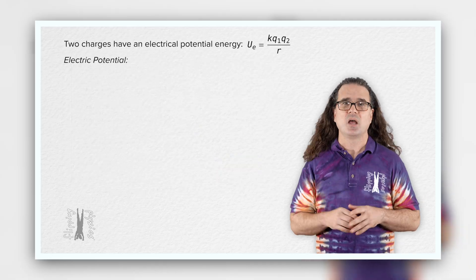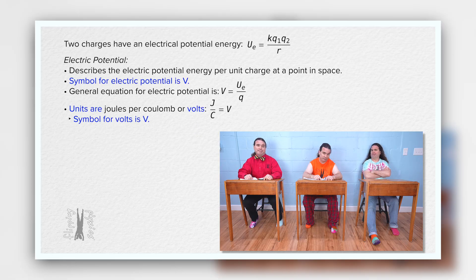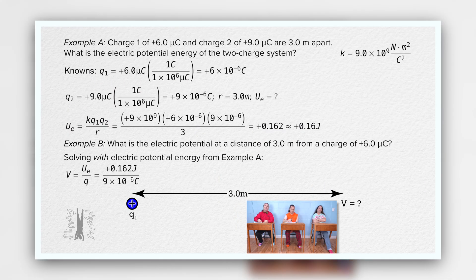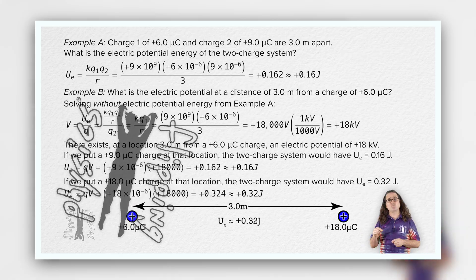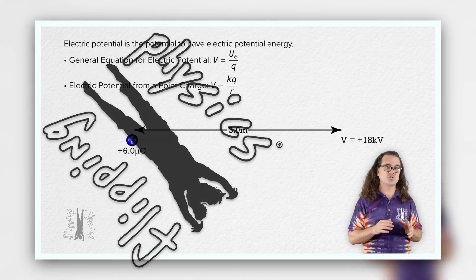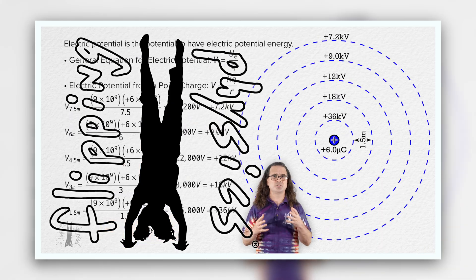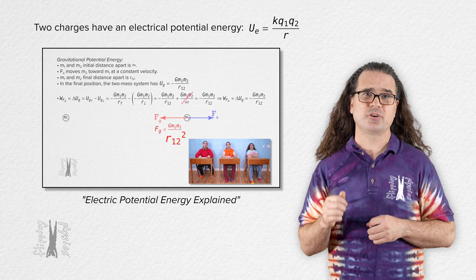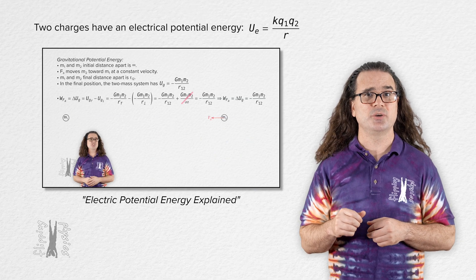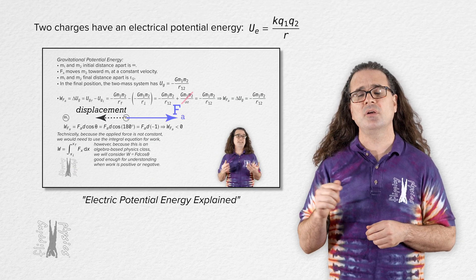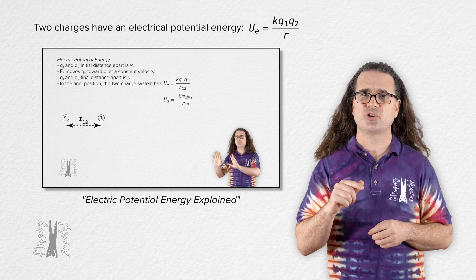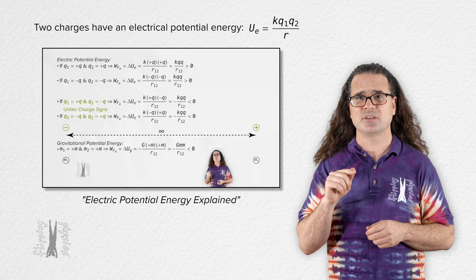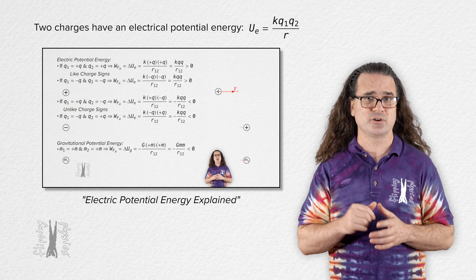Good morning. Today we are going to discuss the concept of electric potential. We already learned that two charges have an electric potential energy which equals the Coulomb constant times charge 1 times charge 2 divided by the distance between the centers of the two charges.